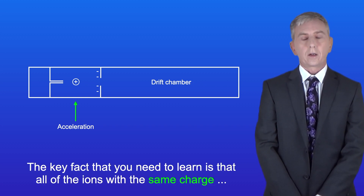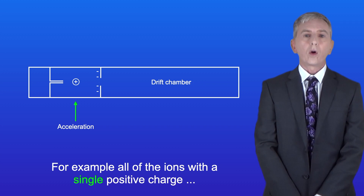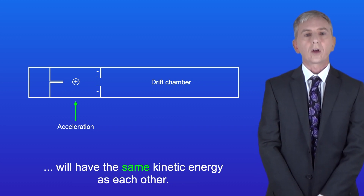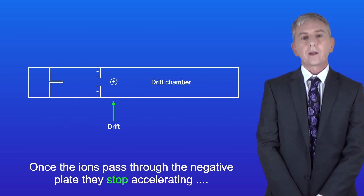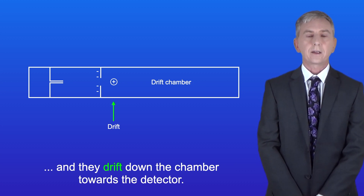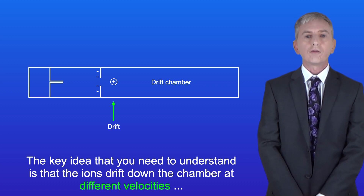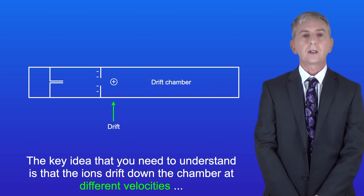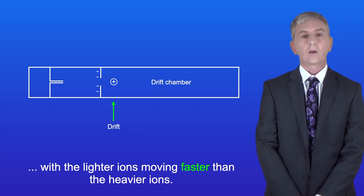The key fact you need to learn is that all of the ions with the same charge will have the same kinetic energy. For example, all of the ions with a single positive charge will have the same kinetic energy as each other. Once the ions pass through the negative plate they stop accelerating and drift down the chamber towards the detector, with lighter ions moving faster than the heavier ions.